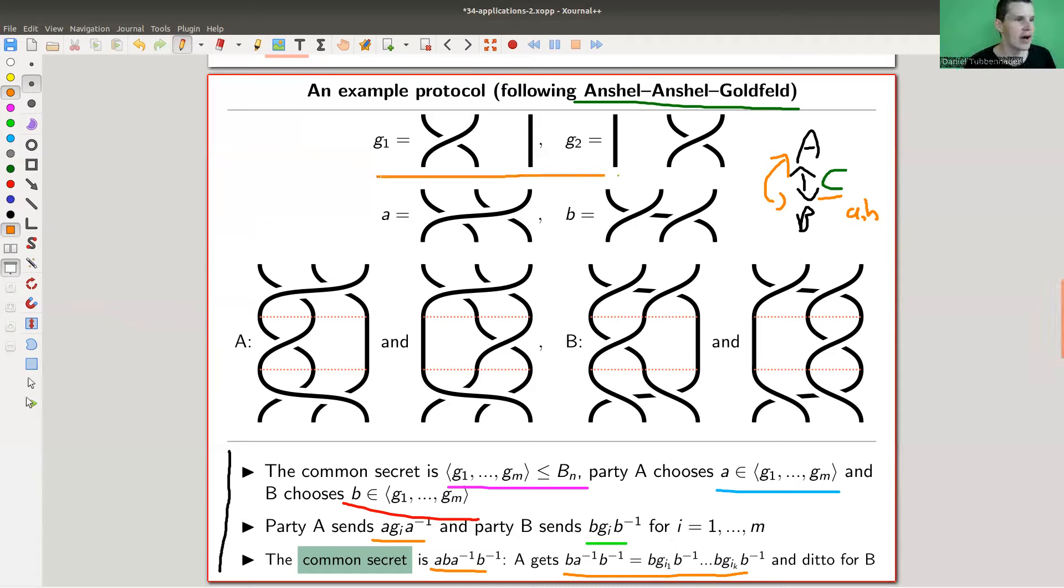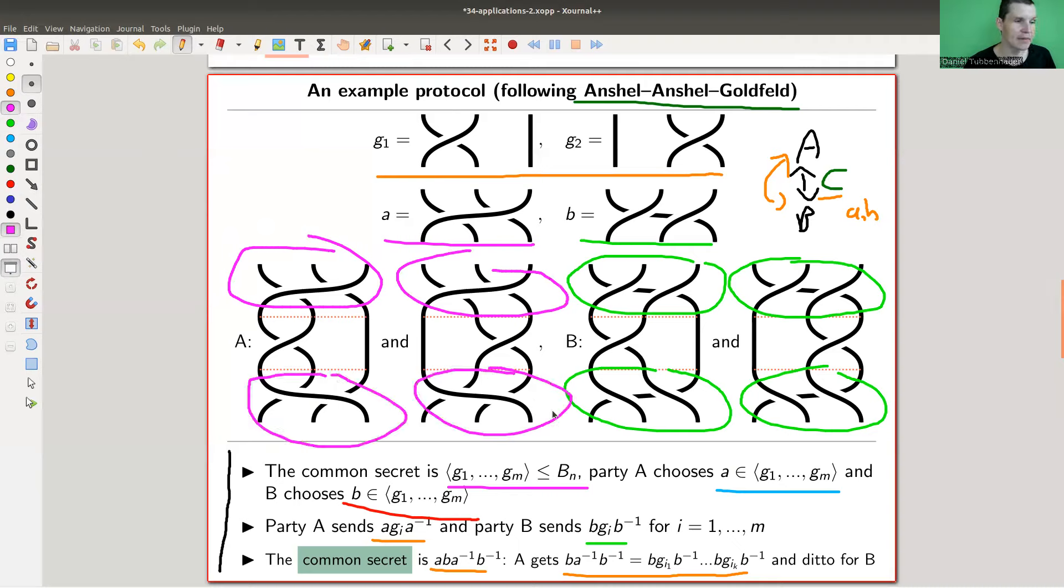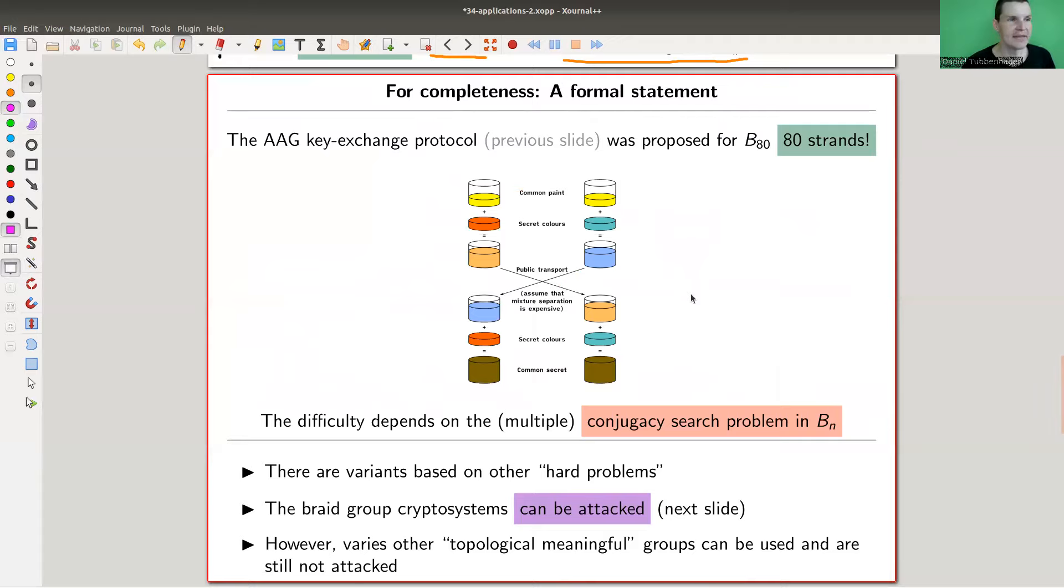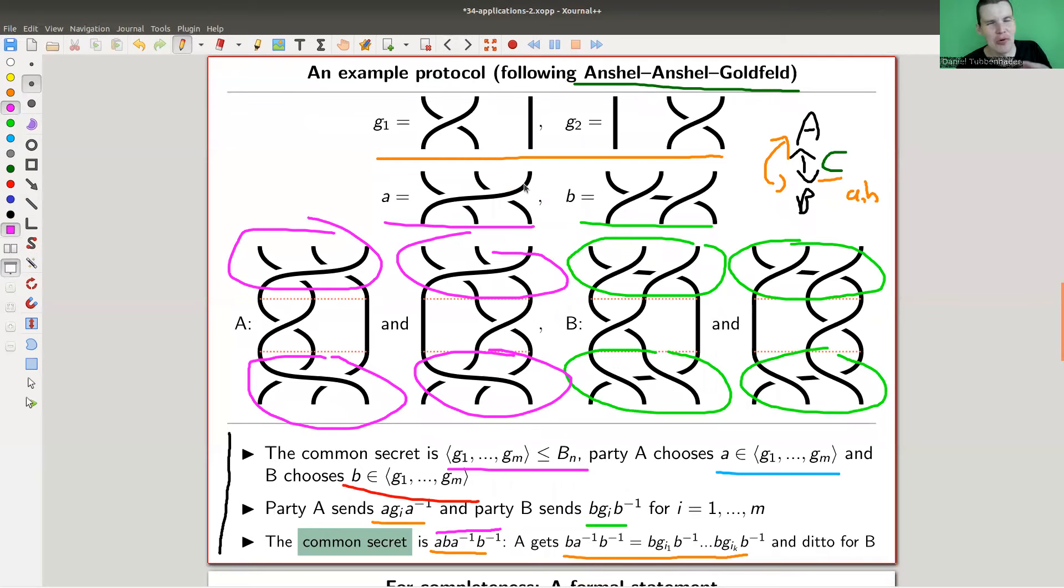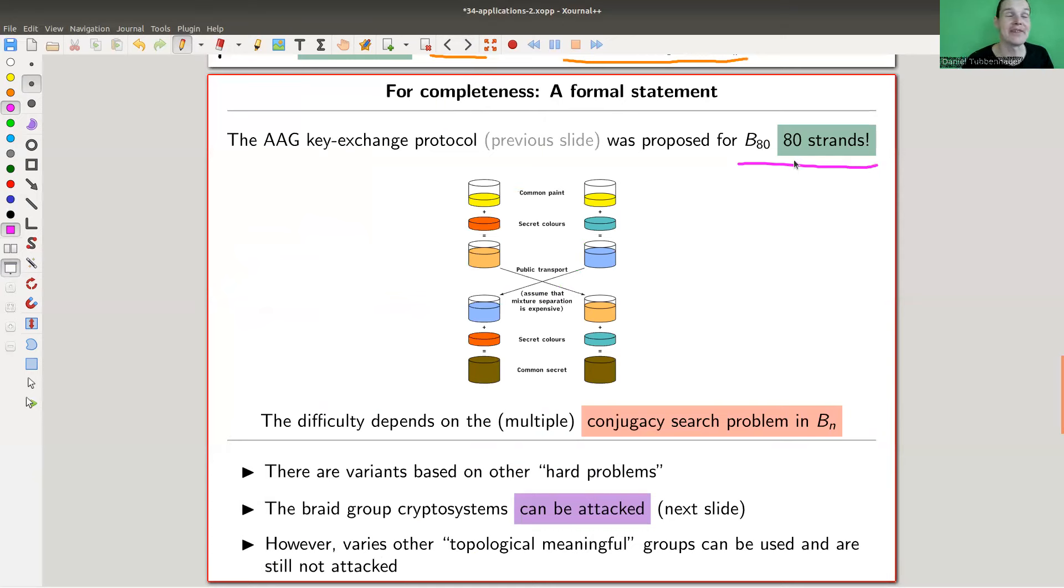Party A just chooses an element of the subgroup, and party B chooses an element of the subgroup, which I will name A and B. Party A now will send all the conjugates of the G's conjugating by A, and party B will send all the conjugates of the G's conjugating by B. The attacker would need to find A and B, but A and B can get the common secret by just composing everything together. So the attacker needs to find A and B, while A and B can communicate very nicely because they have more information than the attacker.